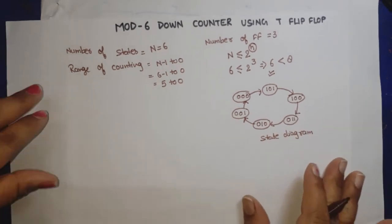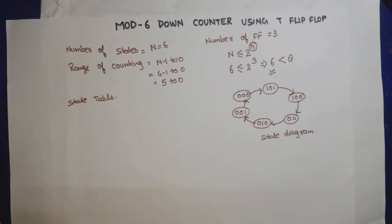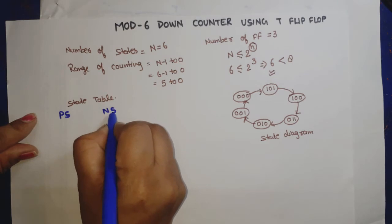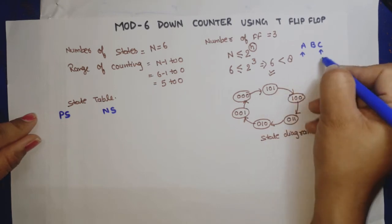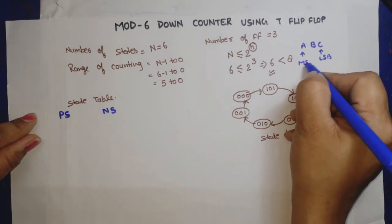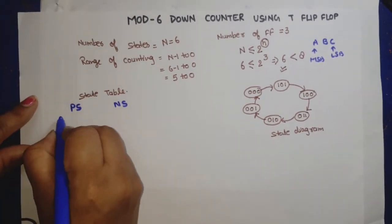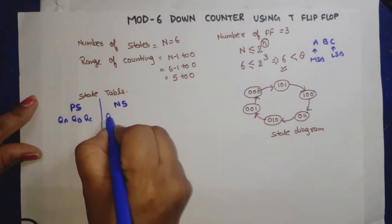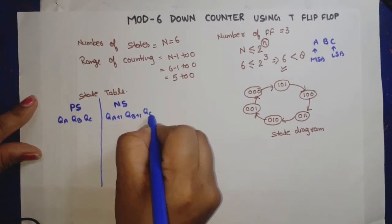Now let's make the state table. In the state table we have present state, next state, and inputs. We have three flip-flops: suppose flip-flop A, B, C. This is MSB and this is LSB. When we write present states, we mention QA, QB, QC. When we write next state, we write QA+1, QB+1, QC+1.